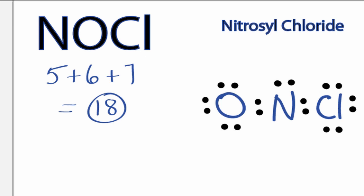At this point, the oxygen and the chlorine each have an octet. However, the nitrogen only has 6 valence electrons. Let's move 2 valence electrons from the oxygen to form a double bond with the nitrogen.